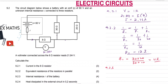9.2.3: internal resistance R of the battery. To calculate the internal resistance, we need to know the total resistance of the whole circuit. We have already calculated the parallel combination as 12 ohms, which is in series with the 8 ohm resistor. So the total external resistance is 12 plus 8, which gives us 20 ohms.